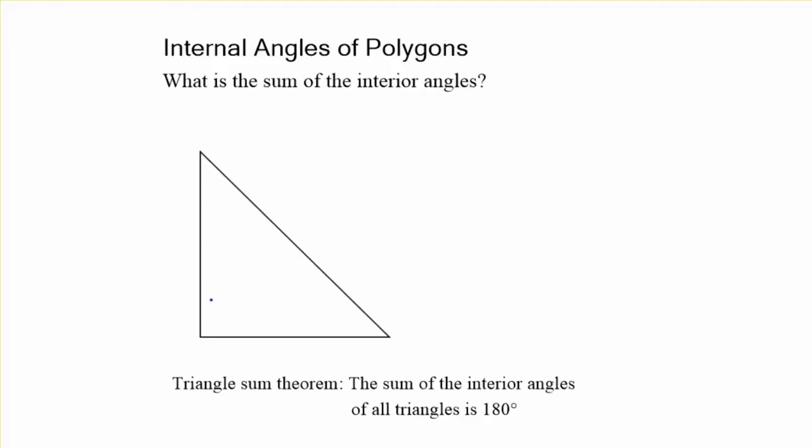Now, that doesn't matter what type of triangle we're talking about. If this right triangle is like that, if those two angles there are the same, they have to be 45 and 45, the sum is going to be 180 degrees.